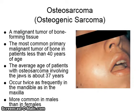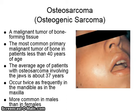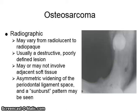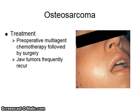Osteosarcoma, also known as osteogenic sarcoma, is a malignant tumor of bone-forming tissue and the most common primary malignant tumor of bone in patients less than 40 years of age. The average age of patients with osteosarcoma involving the jaws is about 37. They occur twice as frequently in the mandible as in the maxilla and are more common in males than in females. Radiographically, it may vary from radiolucent to radiopaque and is usually a destructive, poorly defined lesion that may or may not involve adjacent soft tissue. Asymmetric widening of the periodontal ligament space and a sunburst pattern may be seen. It is treated with preoperative multi-agent chemotherapy followed by surgery.